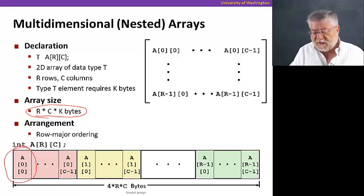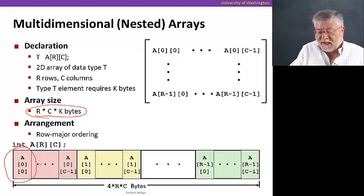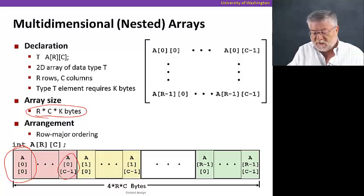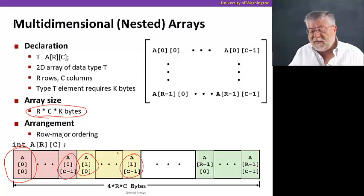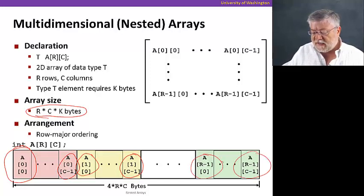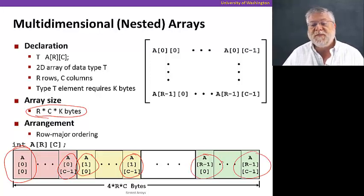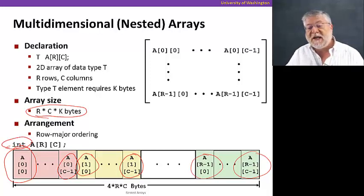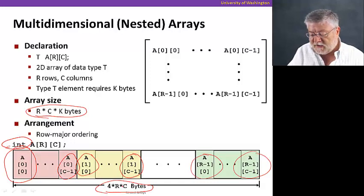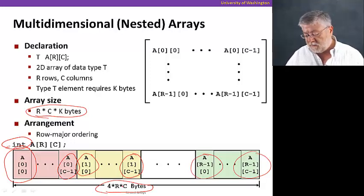Our array then, in general, is of size r times c times k, where r and c are the rows and columns and k is the size of an element. Again, arranged in row-major order. We see the very first element at index [0][0], followed by [0][1], [0][2], all the way to [0][c-1]. Then we start the next row with starting index [1][0], all the way to [1][c-1], and then the next row after that. Eventually we have the last row. For integers, the total size of the memory area is four times the number of rows times the number of columns.